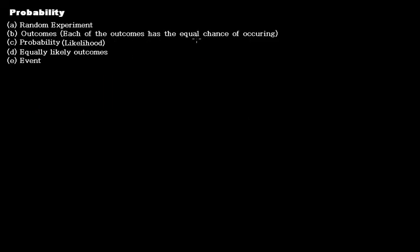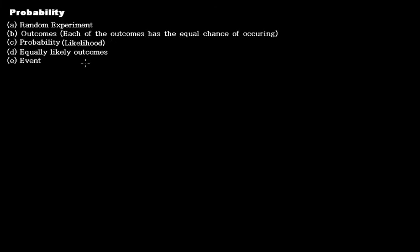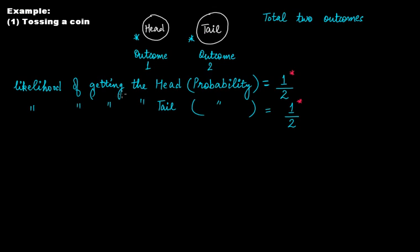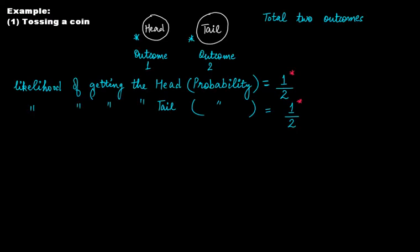So the likelihood of getting head and the likelihood of getting tail are actually equal — both are one out of two. And that is what we said: each of the outcomes has an equal chance of occurring. That is the difference between chances and probability. In chances, outcomes do not have equal likelihood, but in probability they do.